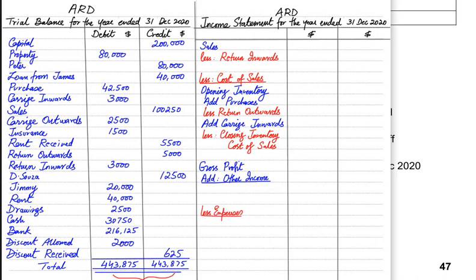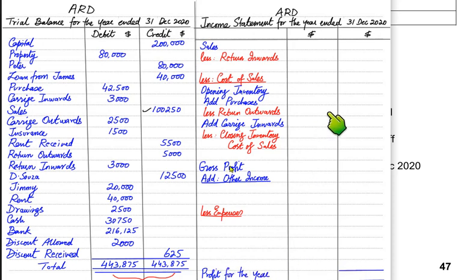After other income, we charge all of the expenses, which are necessary to run and operate the business. Finally, we are left with the final figure known as profit for the year. In previous terminology this was known as net profit, but the current terminology used by the CAIE examiner is profit for the year.